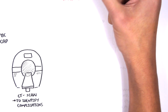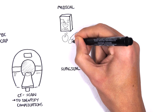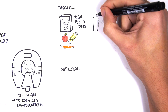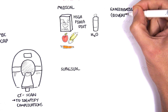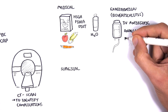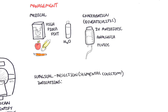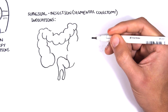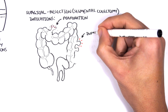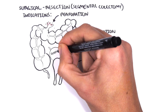Management of diverticular disease can be divided into medical and surgical. Medical management focuses on diet — promoting a high fiber diet and drinking more water. During exacerbations of diverticulitis, IV antibiotics, analgesia, and fluids in hospital may be needed. Surgical management includes resection and segmental colectomy. Indications for surgery include perforation of a diverticulum, inflammation failing to respond to medical treatment, an undrainable abscess, and fistula formation.